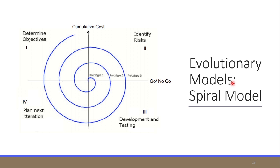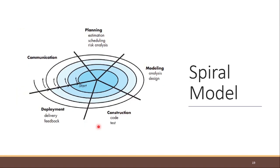Spiral model. The spiral model couples the iterative nature of prototyping with the controlled and systematic aspects of the waterfall model — meaning planning, design, construct, deploy — and combines them. You can see it starts at communication, then planning and determining objectives, one prototype is ready, then the process repeats again and again, going in a spiral to produce multiple prototypes. It provides the potential for rapid development of increasingly more complete versions of the software.